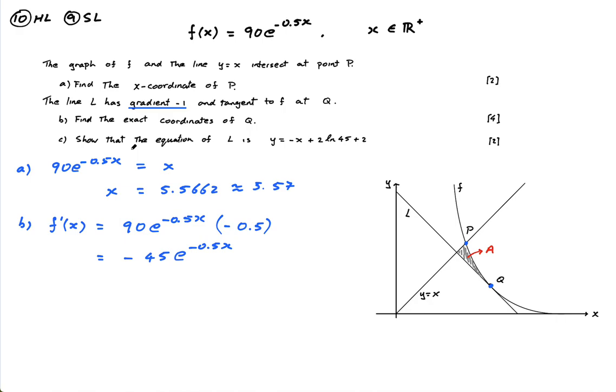Now it says the gradient of this line is negative 1. So that's like saying the derivative of f at Q equals negative 1. So I'm going to actually write that down and say minus 45e to the minus 0.5x equals negative 1.